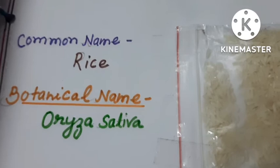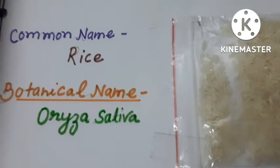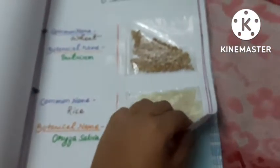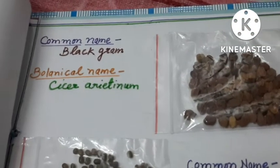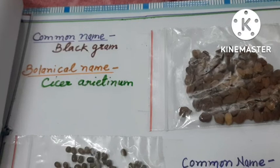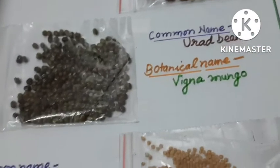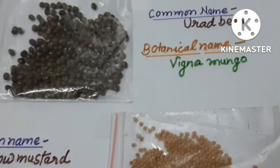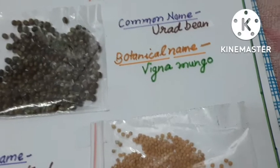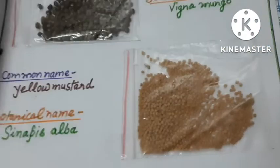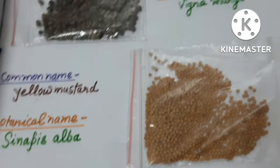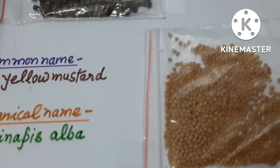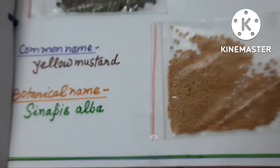I have written the common name rice and botanical name podicacetema. Here I have filled the seeds of black gram and written common name black gram and botanical name ariatenam. Here common name urad bean, botanical name vignabunvok. And here I have filled the seeds of yellow mustard with common name yellow mustard and botanical name cyanobus herba.